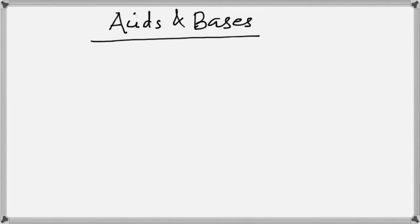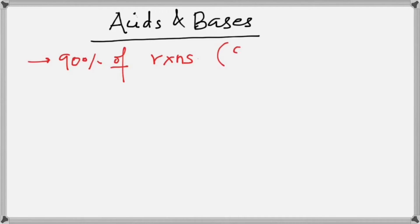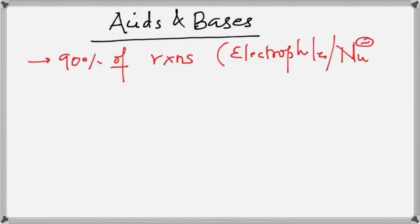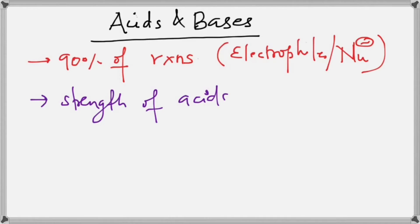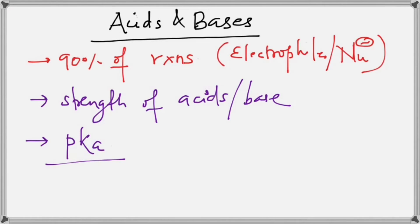In this video we will talk about acids and bases for organic chemistry. This is a very important topic in organic because ninety percent or more reactions in organic chemistry occur between acids and bases. By acids I mean electrophiles and by bases I mean nucleophiles. That is why these topics deserve a special mention, and we often get questions about deciding the strength of acids and bases.